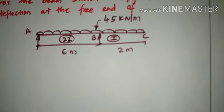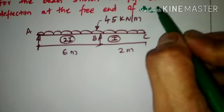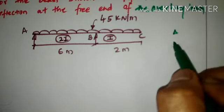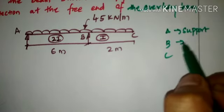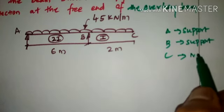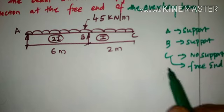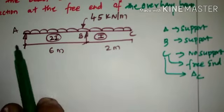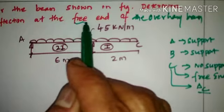Welcome to this session on the unit load method. In this problem, we are going to find out the deflection at the free end of an overhanging beam. The beam has three points: A, B, and C. Point A and point B are provided with supports, while point C has no support, making C the free end. We will find the deflection at point C, denoted delta_C.